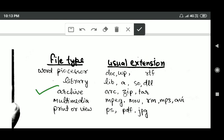For archive type of files, the usual extension is zip, tar, or arc. For multimedia type of files, the usual extension is mpg, mov, rm, mp3, or avi. For print or view types of file, the usual extension is ps, pdf, or jpg.